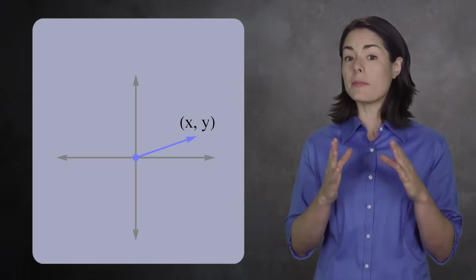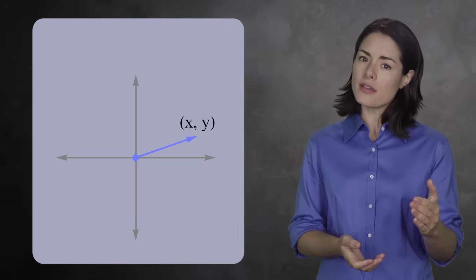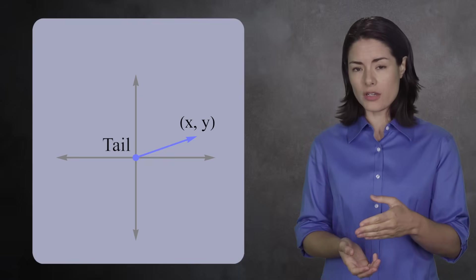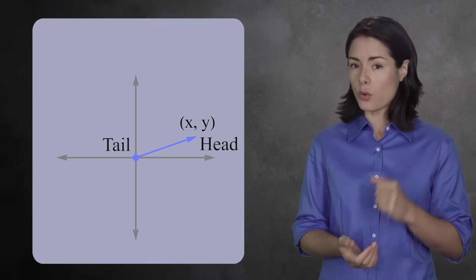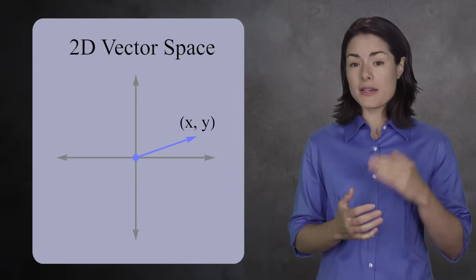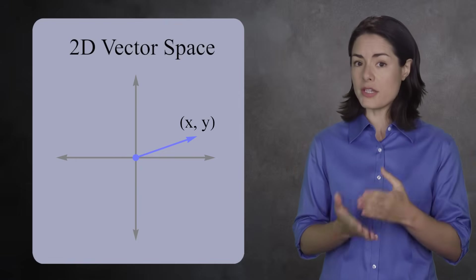In the plane, a vector is described by a pair of numbers, the x-coordinate and y-coordinate. It's assumed that the tail of the vector is at the origin, while the head of the vector is at the given coordinates. We call all the vectors in a plane a two-dimensional vector space, because it takes two numbers to describe each vector.